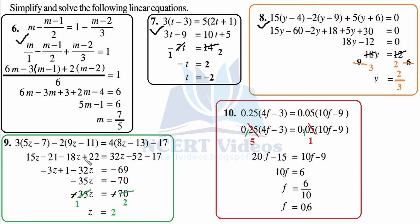So let's simplify prior to separating. 15z minus 18z — different signs, subtract — gives minus 3z. Constants: minus 21 and plus 22 — different signs, subtract — sign of greater number, plus 1. In the same step, transposing 32z towards the left-hand side gives minus 32z. On the right-hand side we are left with minus 52 minus 17 — same signs, add — gives minus 69.